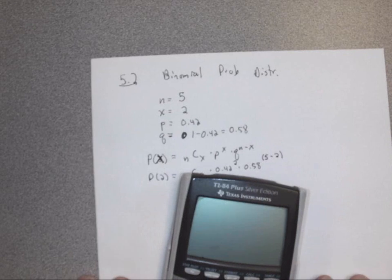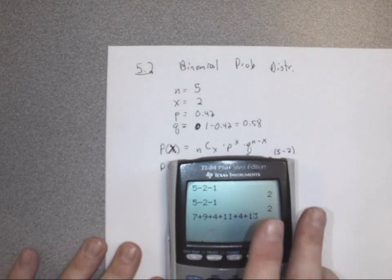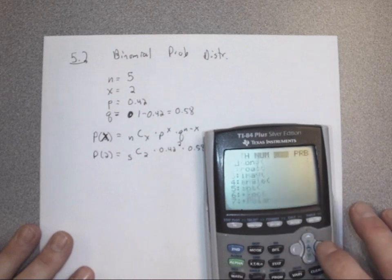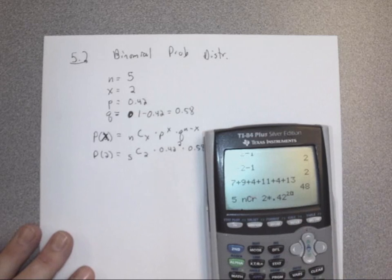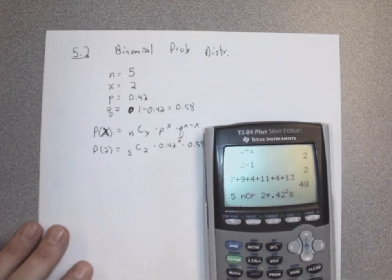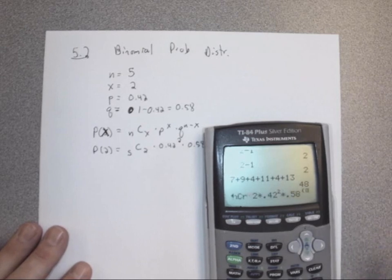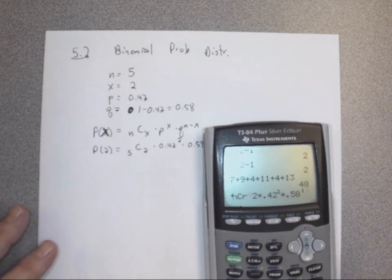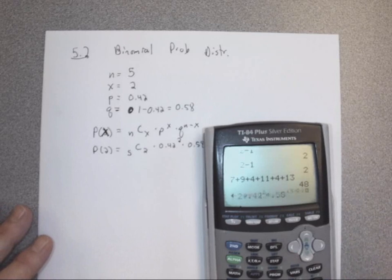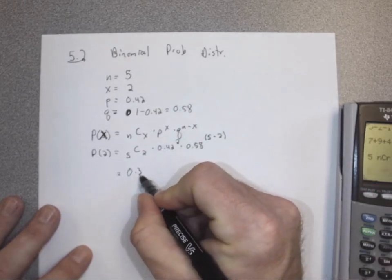I'll type it into the calculator. I have 5, then math, go to probability, down to choose, then 2. Multiply by 0.42 raised to the 2 — press right to get out of the exponent — times 0.58 raised to (5 minus 2) in parentheses. Remember three sig figs: we get 0.344.